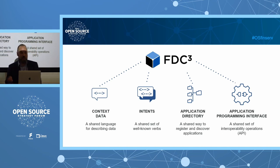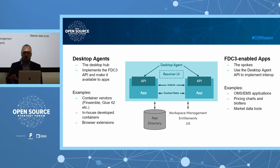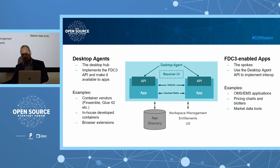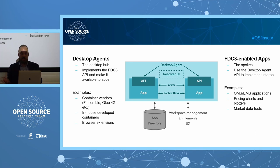There are generally two types of participant in FDC3. Desktop agents are the hub of the desktop — they implement the FDC3 API and make it available to all applications. Examples include FinSombal, Glue42, and others, as well as in-house developed containers at banks and buy-sides, and the FDC3 Desktop Agent Chrome Extension, another FINOS project. The other side is FDC3-enabled applications — the spokes — which use the desktop agent API to talk to each other: OMS, EMS, pricing, charts, market data tools.